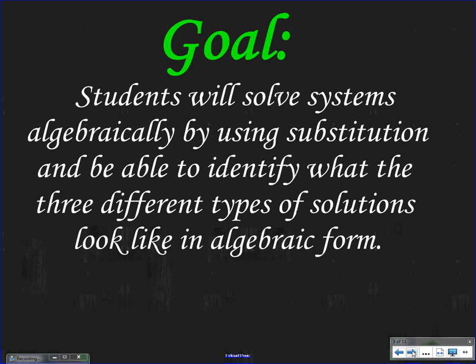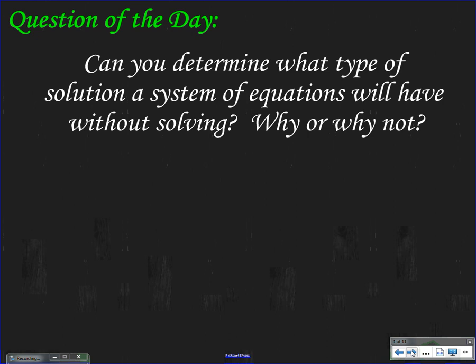Our question of the day is: can you determine what type of solution a system of equations will have without solving? We know that the three types of solutions are: it can have one point, it can have no solution when the lines are parallel, and it can have infinitely many solutions when it happens to be the same line. What we actually want to know is, is there a way just to look at an equation and tell which of the three solutions you'll have? Maybe we might have to manipulate one or both equations a little bit, but not actually having to solve them.